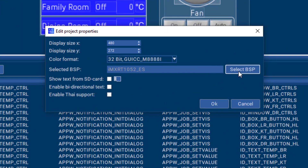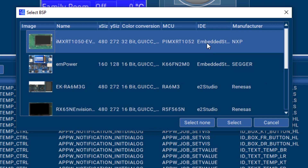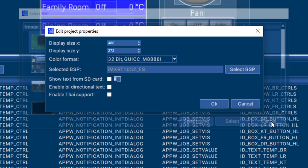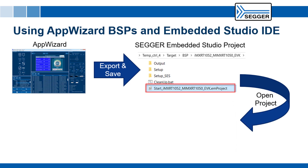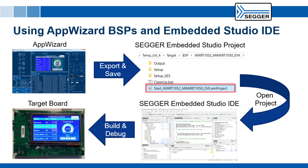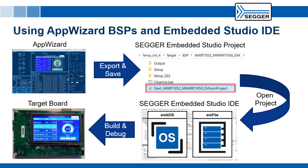Also included in AppWizard are several predefined BSPs for popular evaluation boards from various silicon vendors. These BSPs allow AppWizard to generate ready-to-use projects for SEGGER's Embedded Studio IDE, which is the fastest way of getting the application running on a specific embedded target system. The BSPs also contain binary versions of MBOS, SEGGER's embedded RTOS, and mFile, SEGGER's file system, making the process of outsourcing resources to an external storage medium a lot easier. Please note that using those BSPs in a commercial product requires commercial licenses for MBOS and mFile. It is also possible to use custom user-defined BSPs within AppWizard.